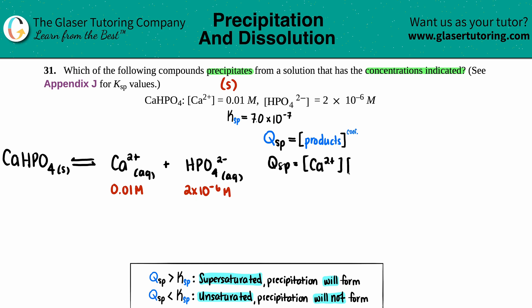So Qsp equals the concentration of calcium 2+ times the concentration of HPO4 2-. I don't have to raise these to any coefficients because the numbers in front of the calcium and hydrogen phosphate are both one. So I'm just going to plug in the numbers: 0.01 goes for the calcium and 2 times 10 to the negative 6 goes for the hydrogen phosphate.